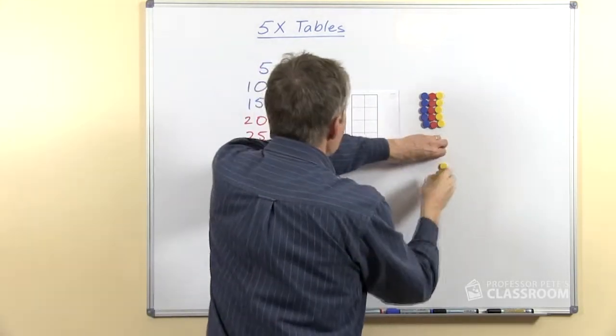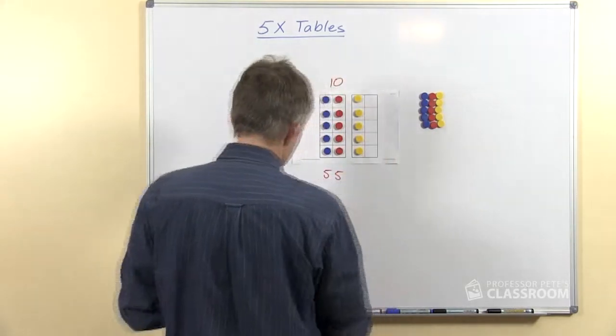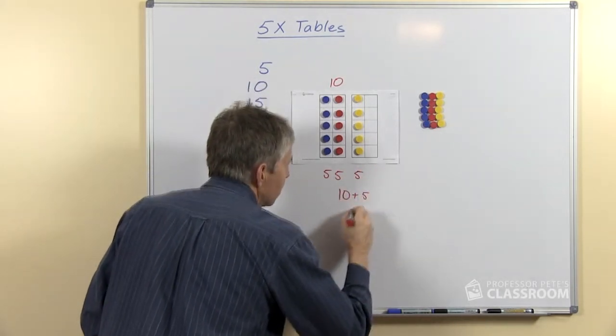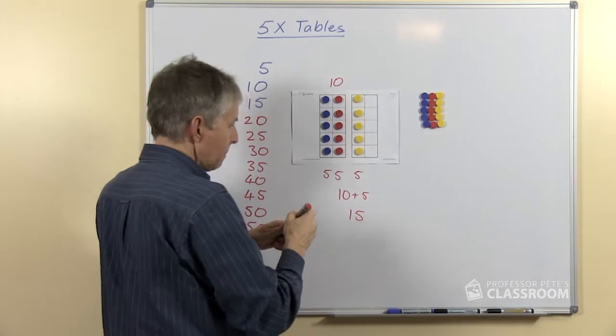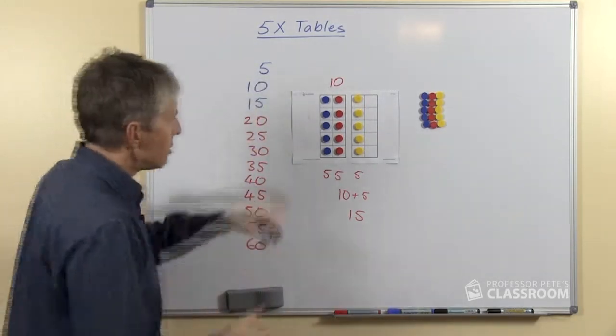What if we had another 5? Of course that would make 10 and 5. Let me write some more numbers down. 10 plus 5 and of course that's 15. And so that is going to be our pattern all the way through the Five Times Table.